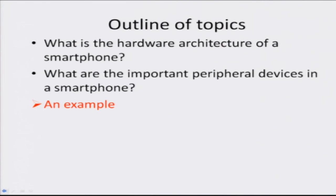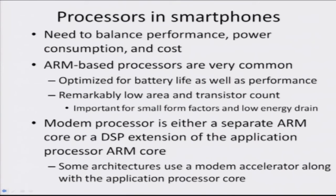Before looking at an example, we need to understand what kind of processors are used in a smartphone. These processors need to balance performance, power consumption, and cost. ARM-based processors have become very common because they are optimized for battery life as well as performance. They also have remarkably low area and transistor count, leading to small form factors and low energy drain, which are very important for smartphone applications. The modem processor is either a separate ARM core or a digital signal processing extension of the application processor ARM core. Some architectures also use a modem accelerator along with the application processor core without having a separate dedicated modem processor.